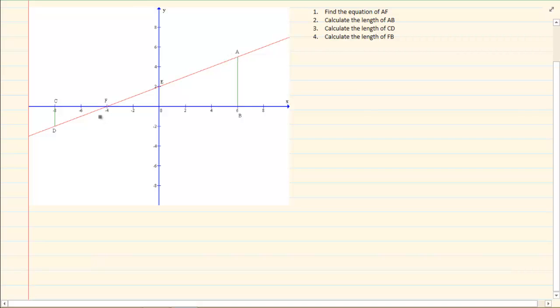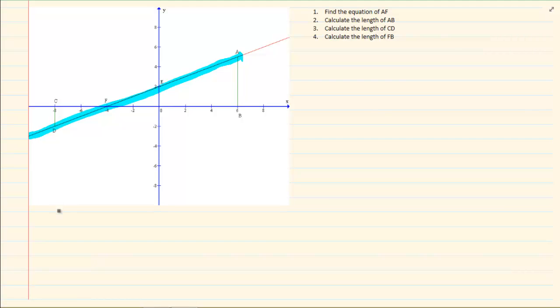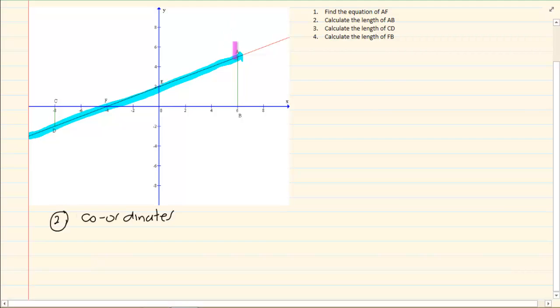Now let us do the following. It says get the equation of EF. To get the equation of a line, you need two coordinates. Now pupils are so busy looking at A and they are so busy looking at D that they don't realize that on the line of AF there is two coordinates. Here is one and here is the second one. For number 1, the coordinates given are (-4,0) and then (0,2).